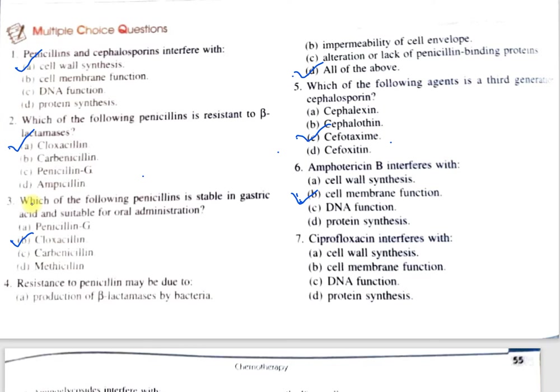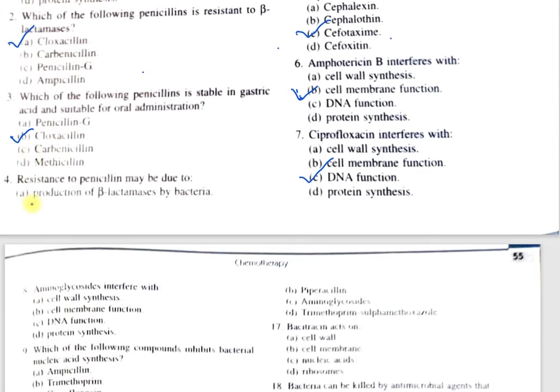Question number 7: Ciprofloxacin interferes with — A, cell wall synthesis; B, cell membrane function; C, DNA function; D, protein synthesis. The correct option is C, DNA function. Ciprofloxacin belongs to the antibiotic class quinolones. These inhibit DNA replication by inhibiting topoisomerase and gyrase, which are responsible for the uncoiling of DNA.